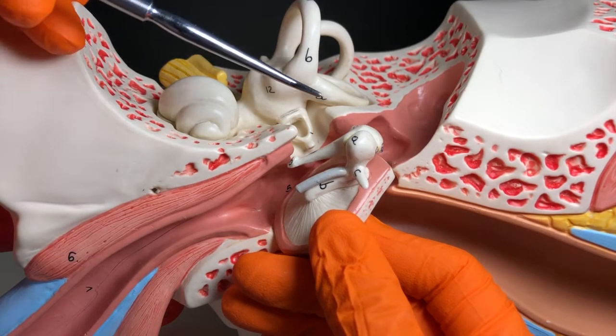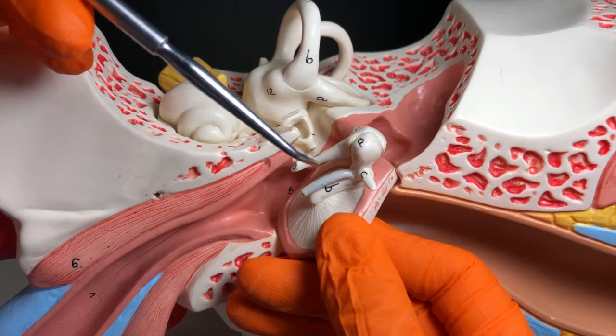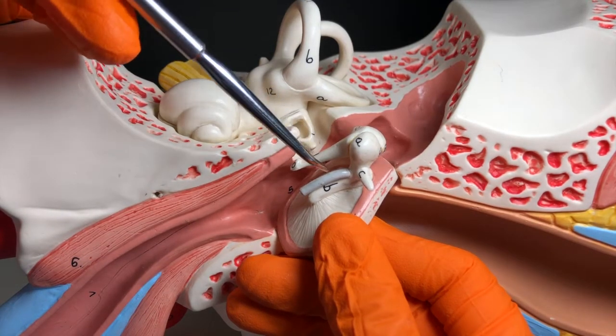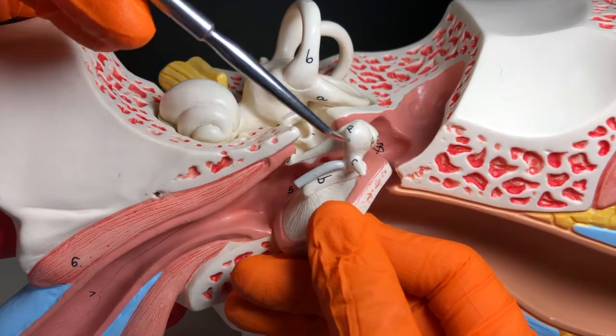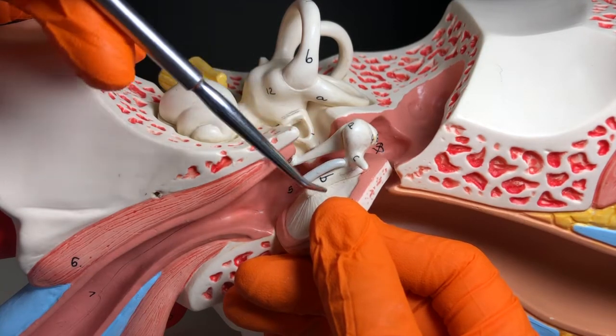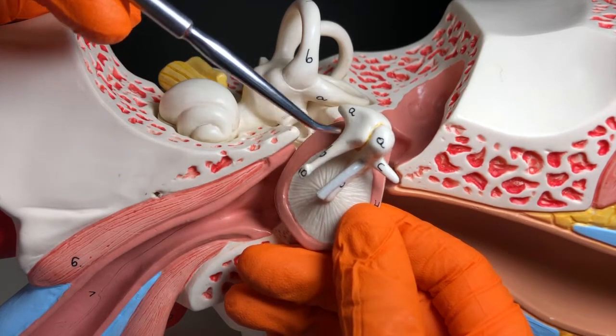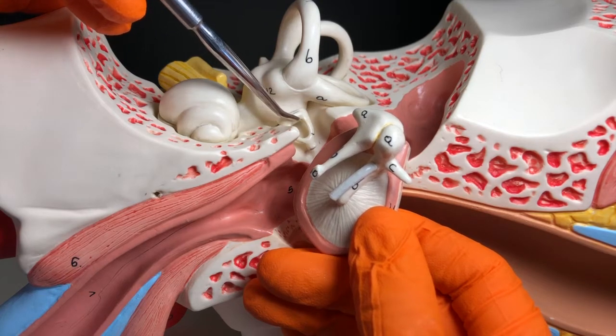Additionally, within the middle ear we have these three auditory ossicles, and these are the tiniest bones we have in the body, which is kind of cool to think about. And those ossicles are going to be the malleus, the incus, and the stapes.